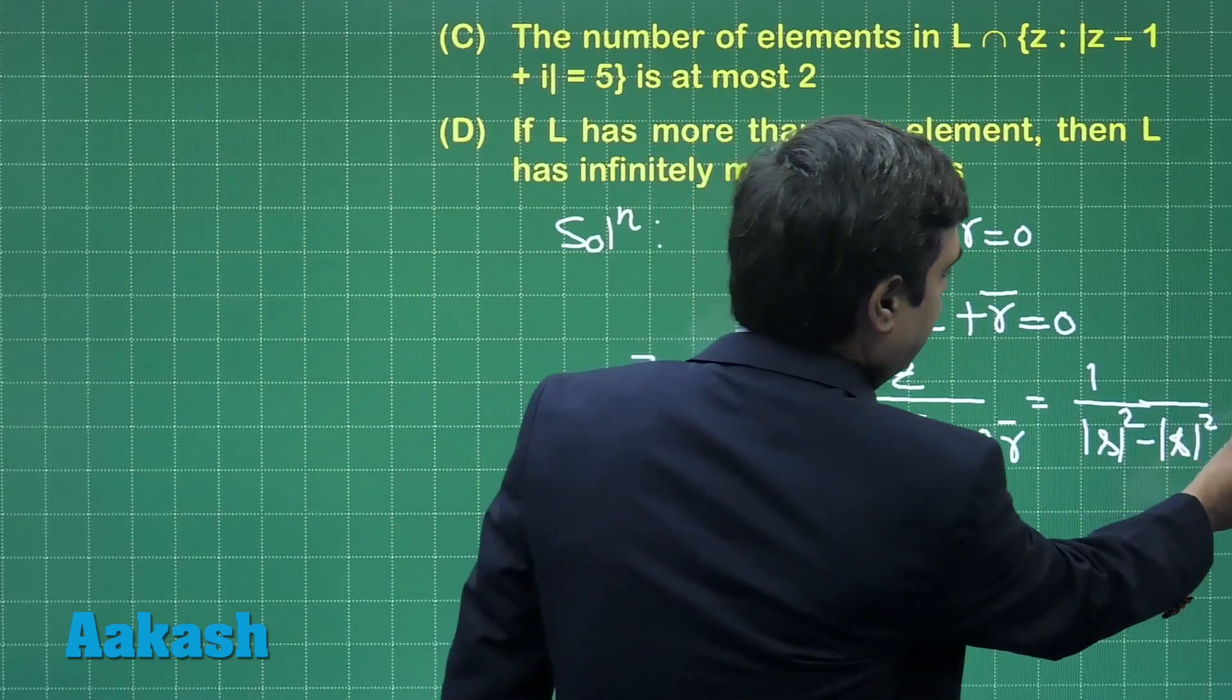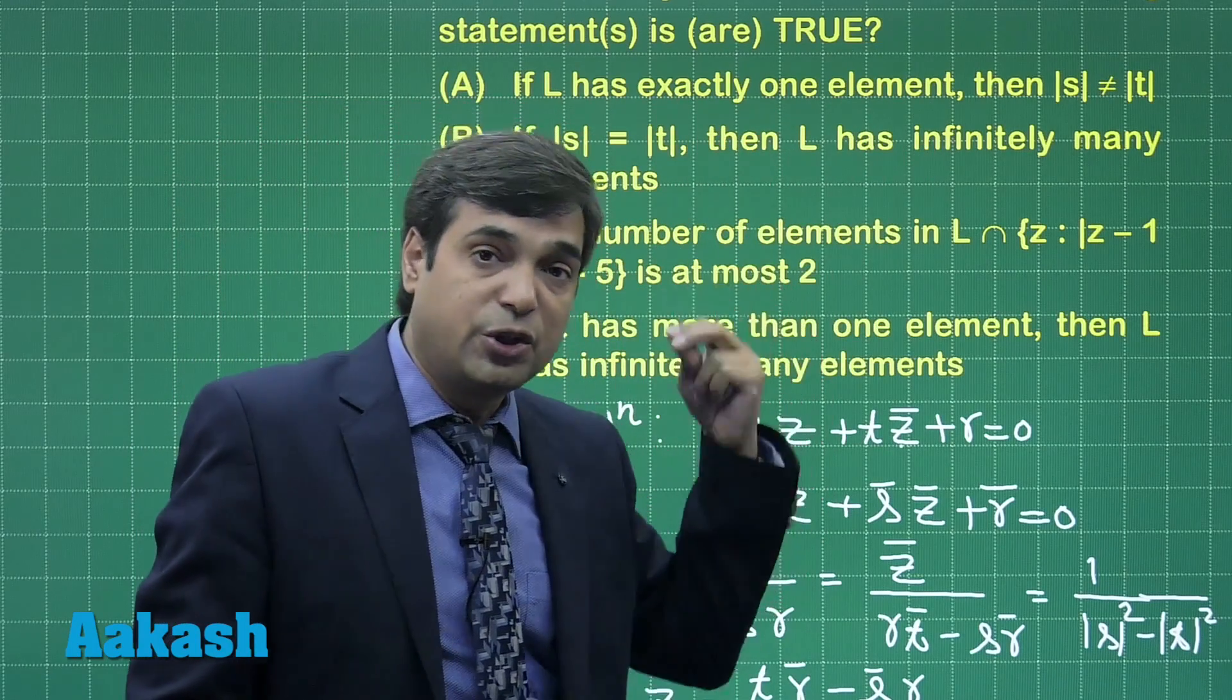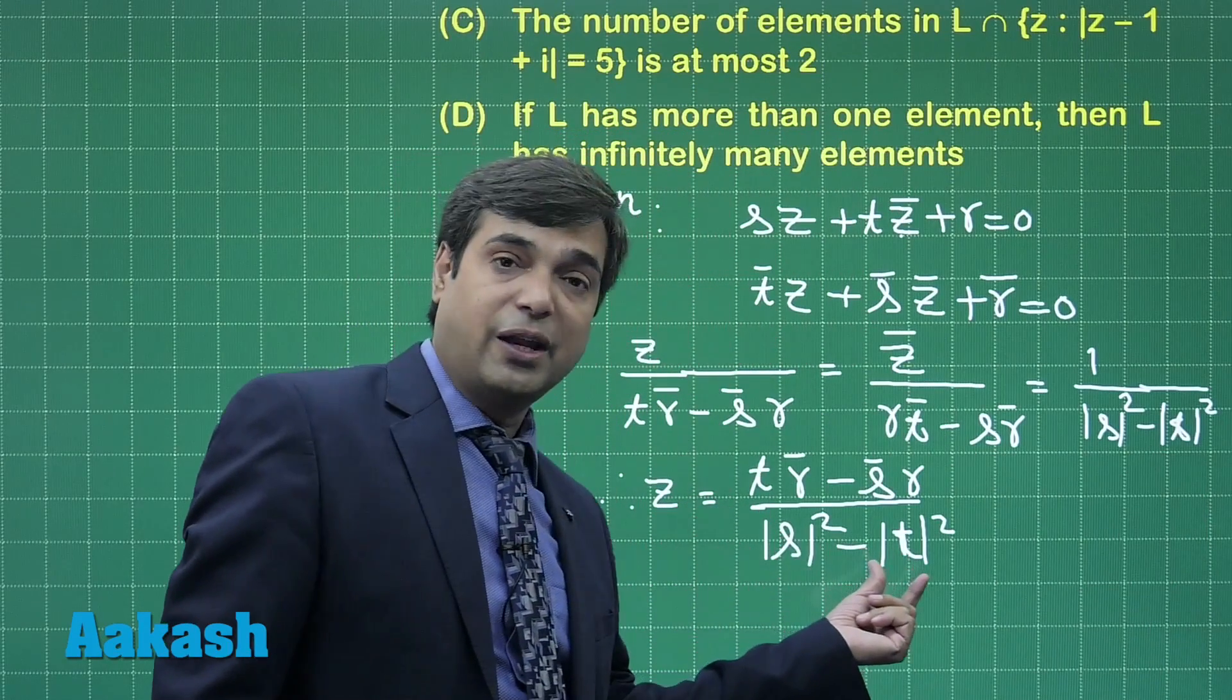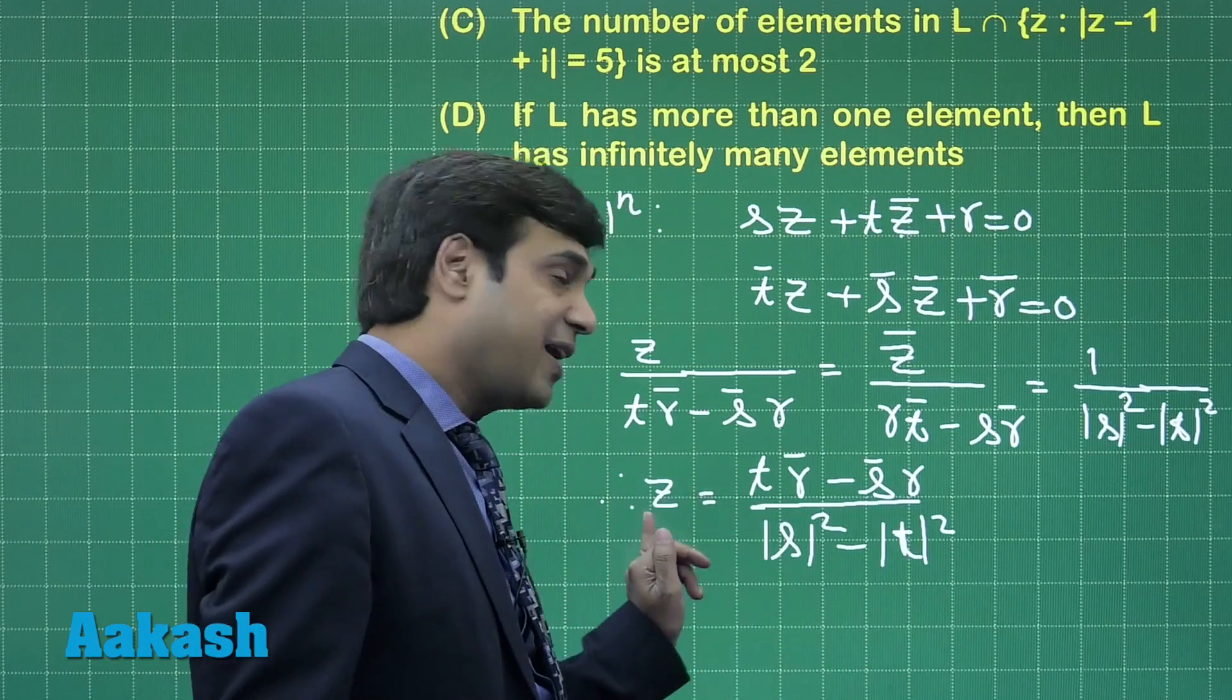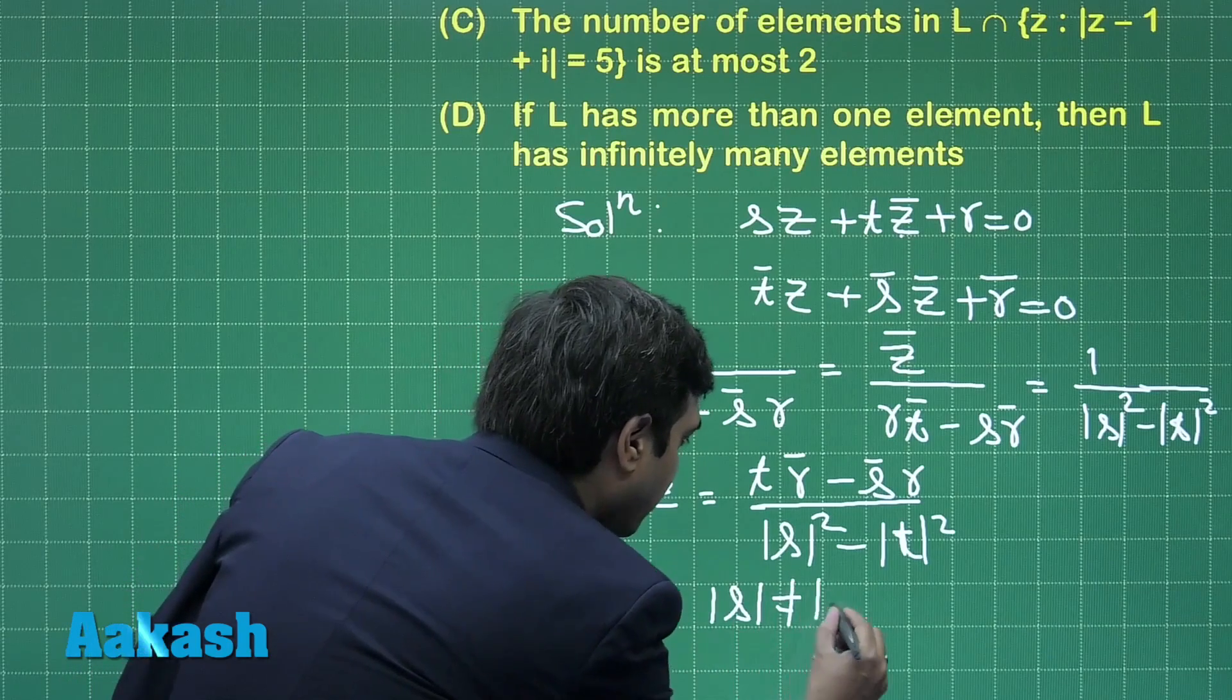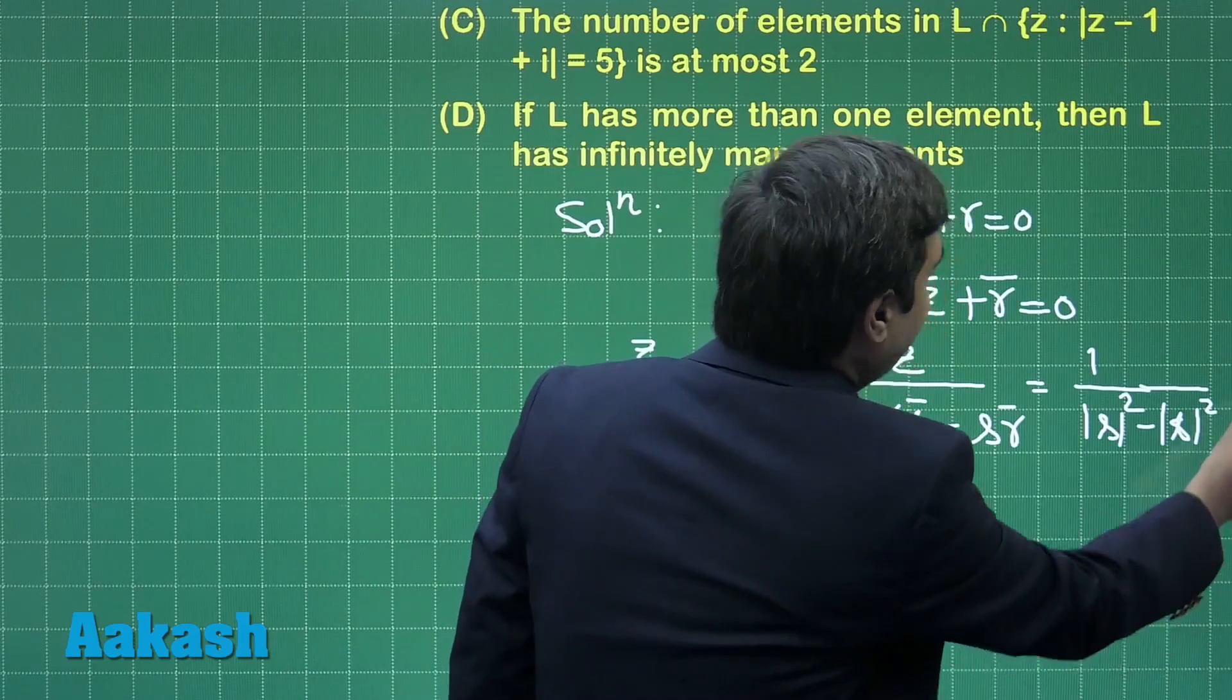Option A says if L has exactly one element then |S| should not be equal to |T|. If we look at the solution obtained by us, in case |S| and |T| are equal then denominator becomes 0. If |S| is not equal to |T|, meaning we are getting unique solution for option A. So option A is correct.